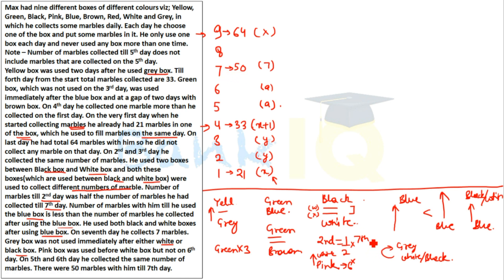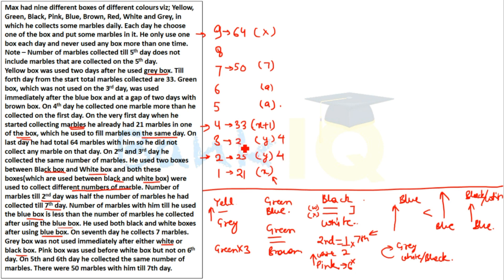Now applying the conditions: since till day 7 there are 50 marbles, and marbles till day 2 is half of that, marbles till day 2 = 25. From day 2 to day 7, the difference is 25. Since days 5 and 6 have the same number 'a', if the difference from day 2 to day 7 is accounted for by days 3, 4, 5, 6, and 7: working through the values, if a = 4, then from 25 we add to get 29, with day 7 adding 7 to give 50 — this checks out. So day 5 = 4, day 6 = 4. This also gives cumulative values like 38 for the total up to day 6.